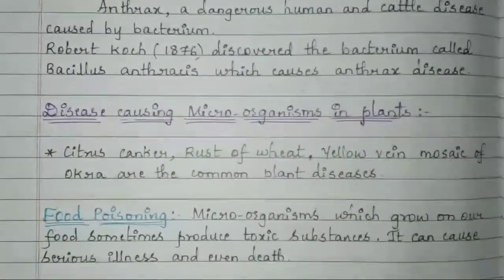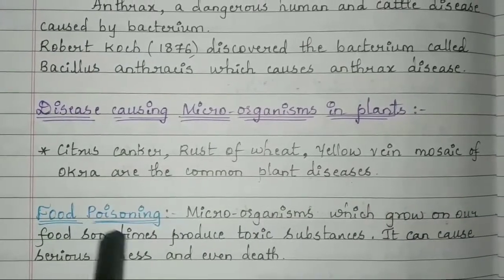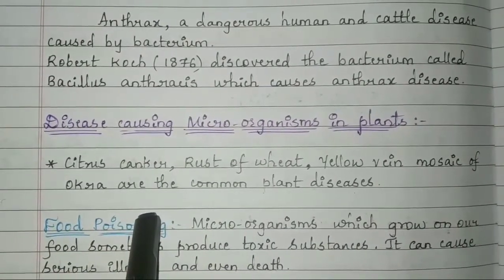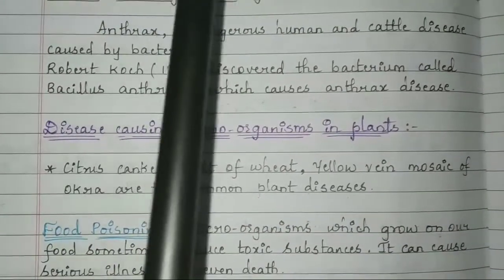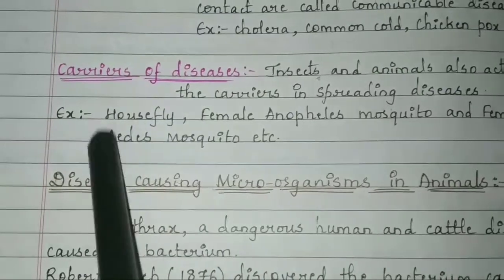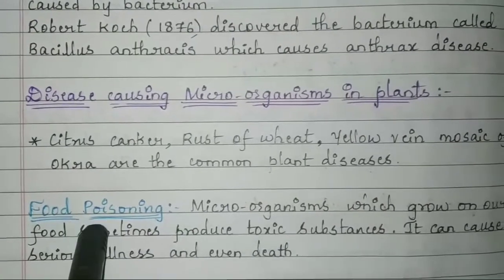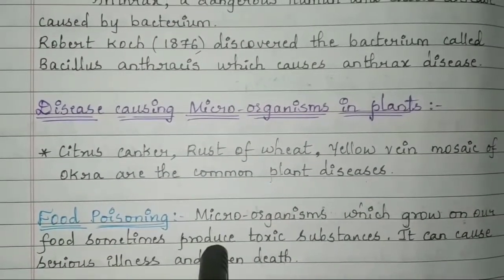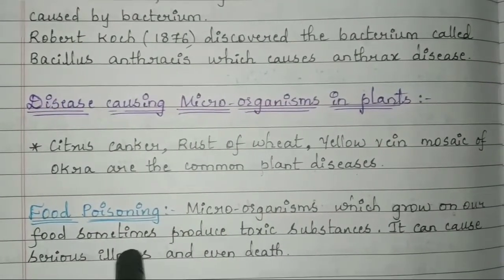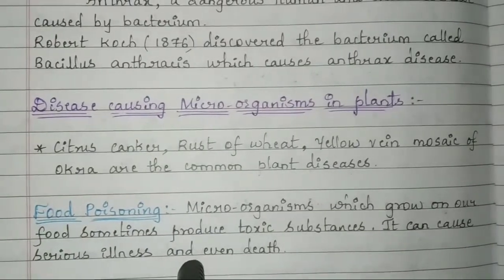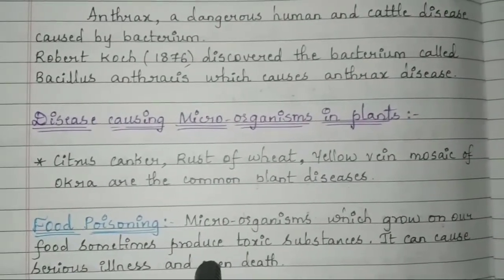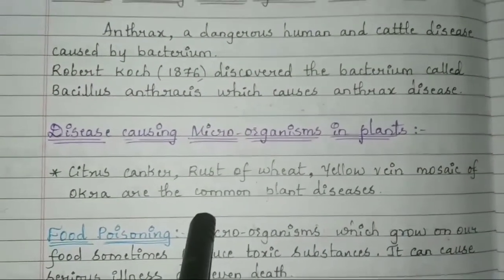Next is food poisoning. As mentioned earlier, the housefly sits on garbage outside and then sits on freshly prepared food that is kept open. Microorganisms can grow on our food and produce toxic substances, which can cause serious illness and even death if not treated immediately by a proper doctor. Food poisoning can cause serious illness as well as death of the organism.